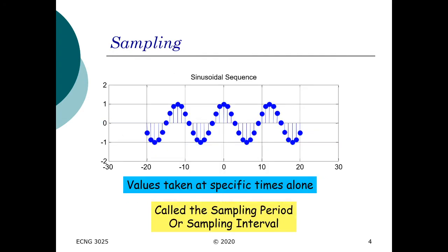If we sample a random sinusoidal sequence, we can see it's a series of stems indicating the magnitude at which each sample was taken. So this would be sample 1, sample 2, sample 3, sample 4, sample 5, and so forth. The spacing between each two samples is known as the sampling time, also referred to as the sampling period or the sampling interval.